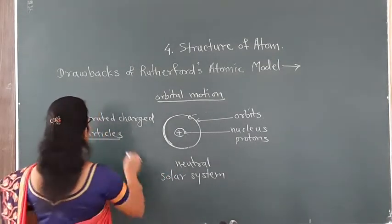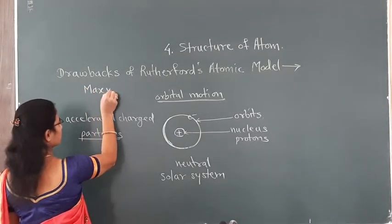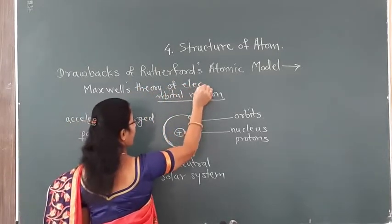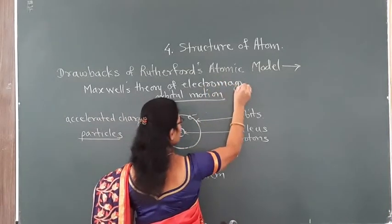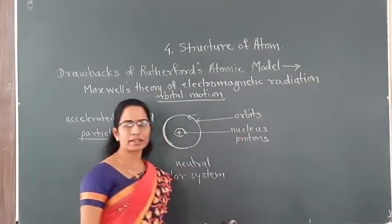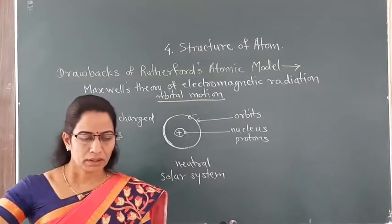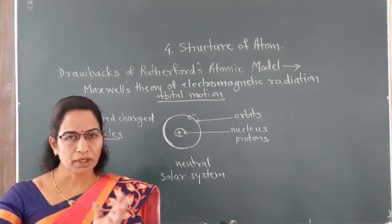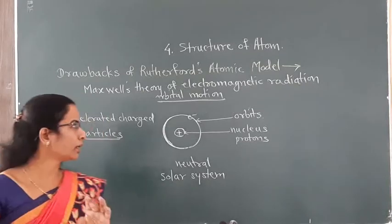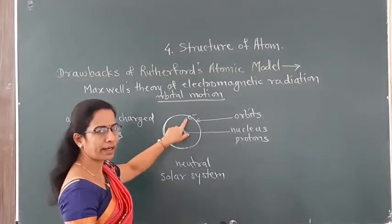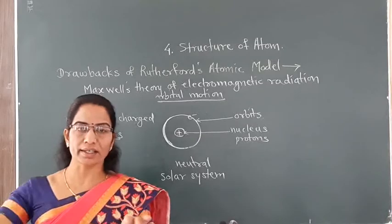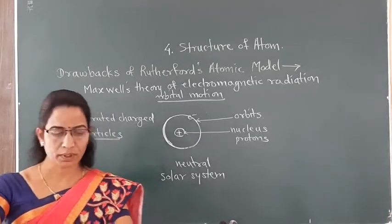According to Maxwell's theory of electromagnetic radiation, whenever any accelerated charged body or particle revolves, it continuously emits radiation. Since these electrons are accelerated negatively charged particles, they should also emit radiation and emit energy.